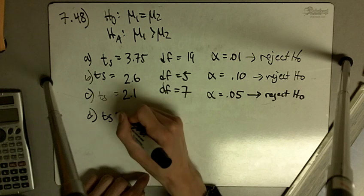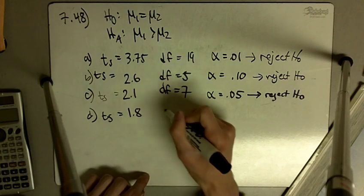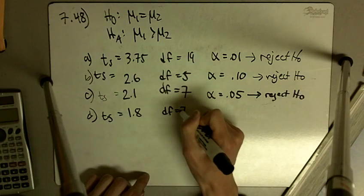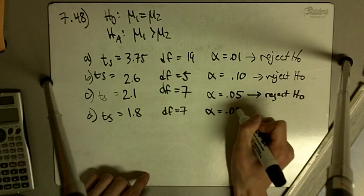And finally, D, our t-statistic is equal to 1.8 with 7 degrees of freedom, and alpha is equal to 0.05.